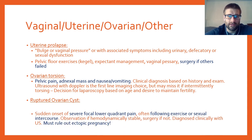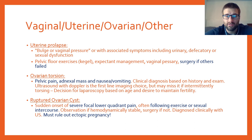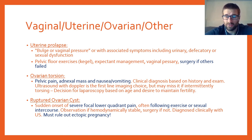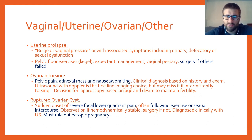Ruptured ovarian cyst presents with sudden, severe focal pain in the right or left lower quadrant — commonly following exercise or sexual intercourse, which are key historical clues. Hemodynamically stable patients are observed; unstable patients require surgery. Diagnosis is with ultrasound, typically showing fluid in the cul-de-sac. For both ovarian torsion and ruptured ovarian cyst, you must check beta-HCG to rule out ectopic pregnancy before anything else.